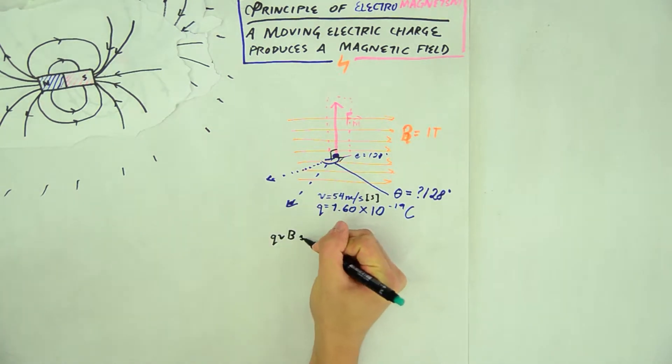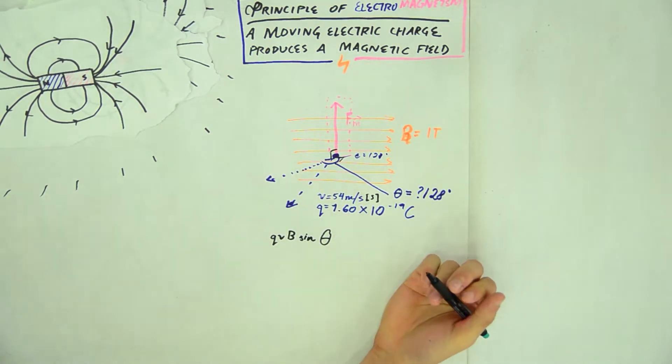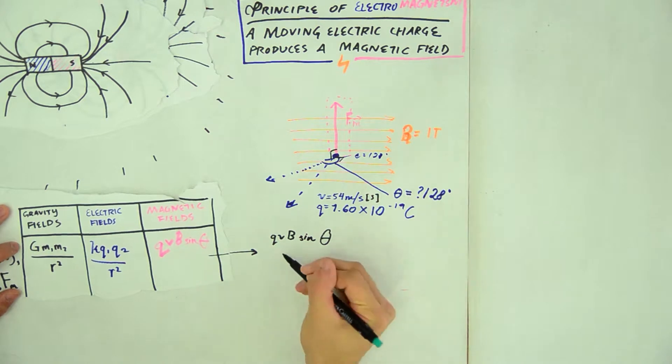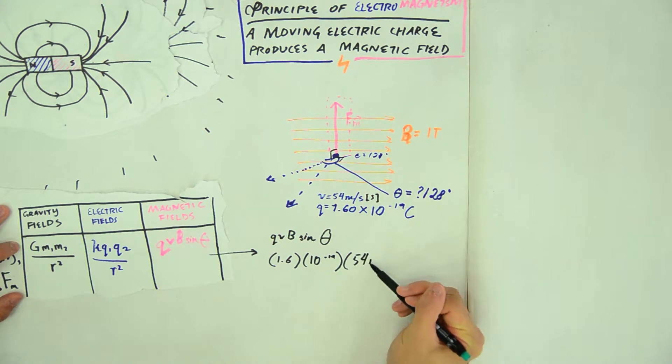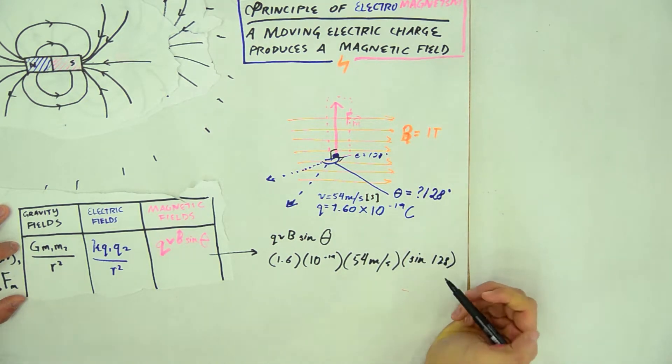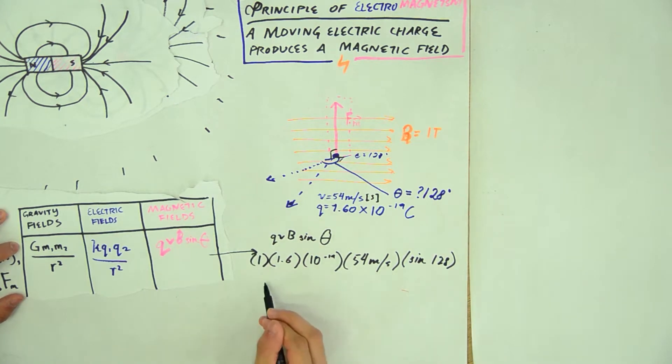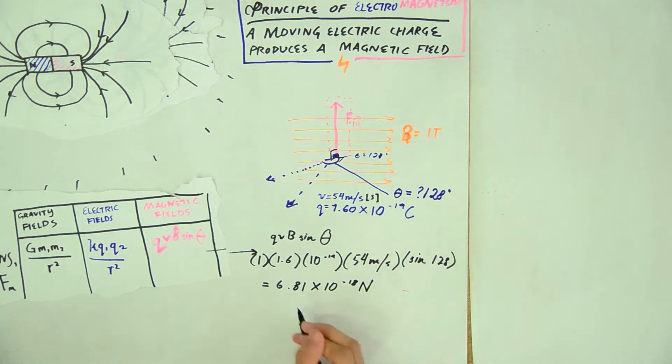To calculate the force of the magnetic field, we simply use the equation that we have established earlier, which is QVB sin theta. Taking the values 1.6 times 10 to the power of negative 14, 54, and sine 128, and multiplying them all together, we get the answer 6.81 times 10 to the power of negative 18 Newtons.